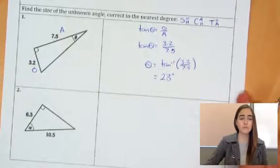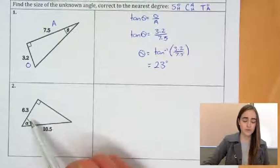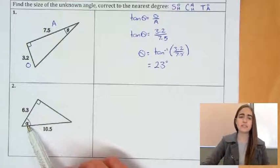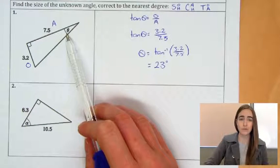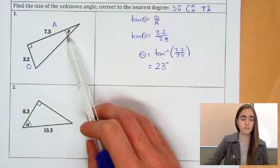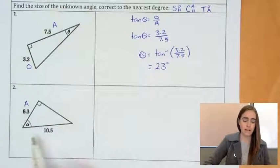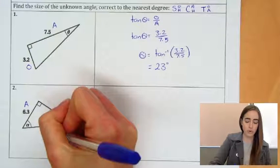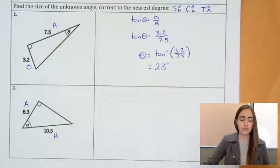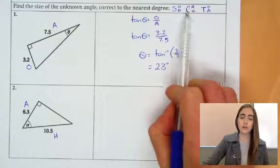So let's have a look at one more example. So this one here, from that angle, this is called alpha this time, but it just works exactly the same way as theta. We're just using a different letter. So from that, this 6.3 is our adjacent side. And the 10.5 is the hypotenuse of that triangle. So adjacent and hypotenuse, that would be cos.